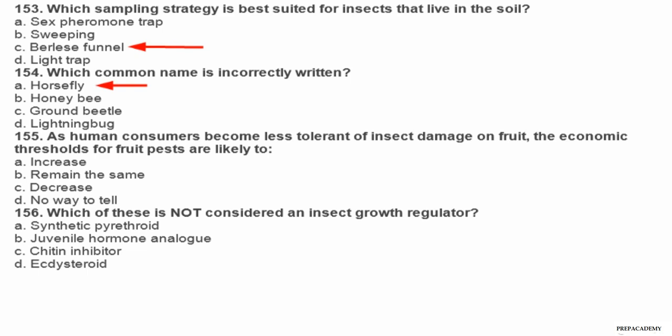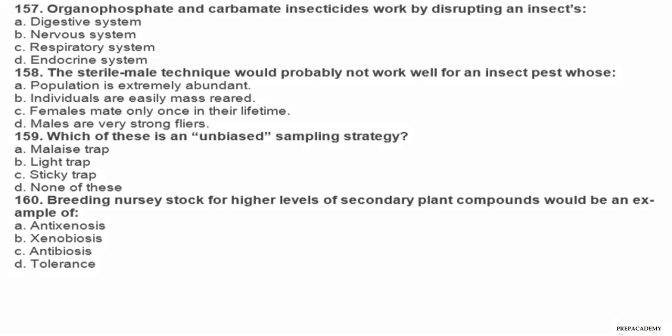Question 155. As human consumers become less tolerant of insect damage on fruit, the economic thresholds for fruit pests are likely to: A increase, B remain the same, C decrease, D no way to tell. Question 156. Which of these is not considered an insect growth regulator? A synthetic pyrethroid, B juvenile hormone analogue, C chitin inhibitor, D ecdysteroid. Question 157. Organophosphate and carbamate insecticides work by disrupting an insect's: A digestive system, B nervous system, C respiratory system, D endocrine system.